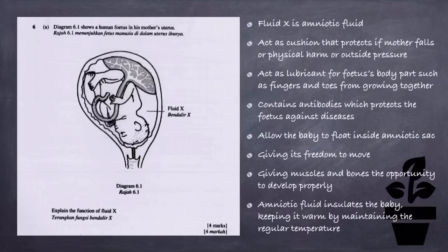Amniotic fluid acts as a cushion that protects the fetus if the mother falls or experiences physical harm or external pressure. It also acts as a lubricant for fetal body parts such as fingers and toes, preventing them from growing together. It contains antibodies which protect the fetus against disease. Amniotic fluid also allows the baby to float, giving it freedom to move and allowing muscles and bones to develop properly. Lastly, amniotic fluid insulates the baby, keeping it warm by maintaining a regular temperature.